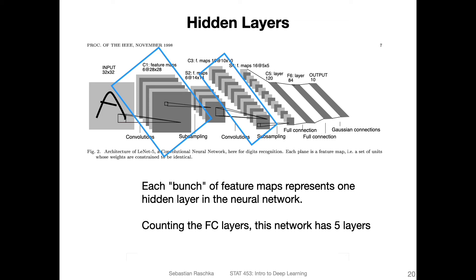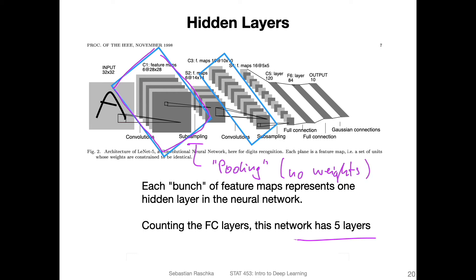Each convolutional layer can be thought of as one hidden layer in this network. Counting the layers, we have five in this architecture. The first convolutional layer, the second convolutional layer, and then two fully connected layers — those are essentially hidden layers — plus the output layer, making it a five-layer network. The sub-sampling, also called pooling, doesn't have any weight parameters, so there's no real learning going on there, and we usually don't count those as layers — we only count layers that have weights.